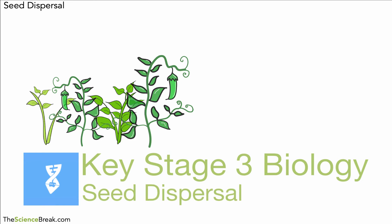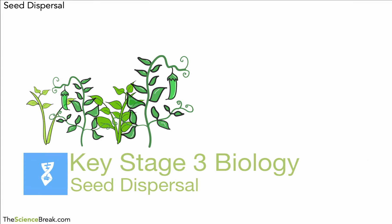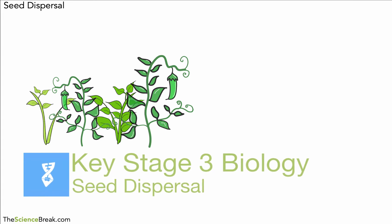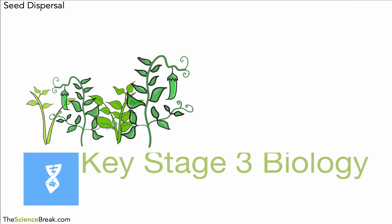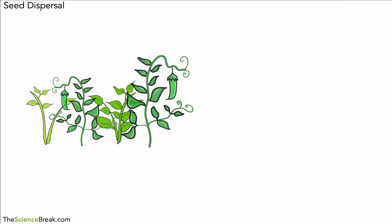Hello and welcome. Today we're looking at a Key Stage 3 biology video about seed dispersal. The first thing to do is explain what we mean by dispersal — the best way to explain that would be to say that it's just like spreading. Seed dispersal is like seed spreading.